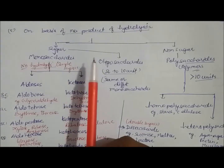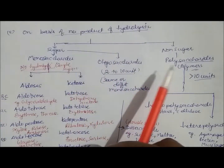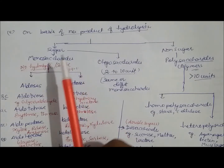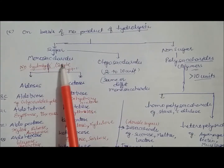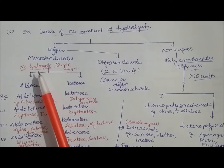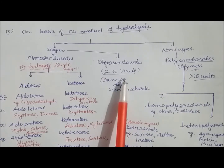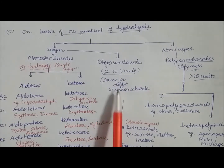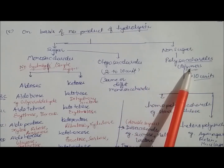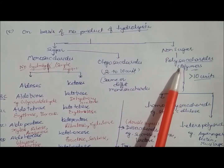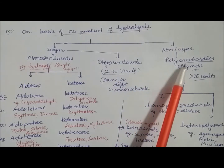On the basis of the number of hydrolysis products, carbohydrates are divided into sugars and non-sugars. Sugars include monosaccharides — which cannot be hydrolyzed and are simple sugars — and oligosaccharides, which can be hydrolyzed into two to ten monosaccharide units (same or different). Non-sugars are polysaccharides, which are polymers with more than ten monomer units.